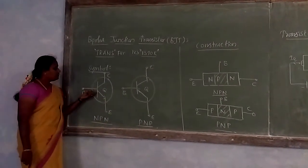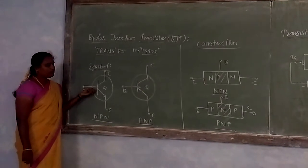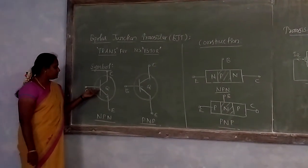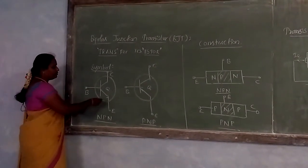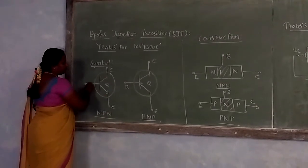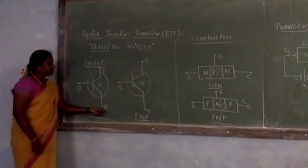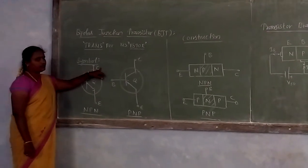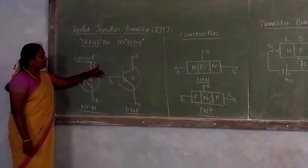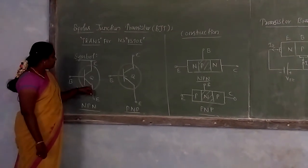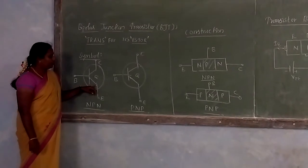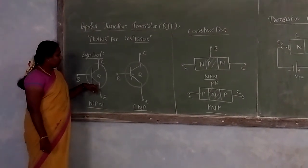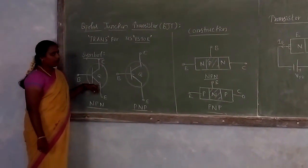There are three terminals in both the NPN and PNP transistors: the emitter, base, and collector. E represents the emitter, B represents the base, and C represents the collector. The emitter represents the current flow direction.